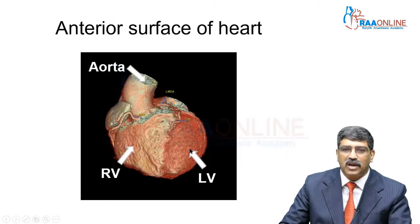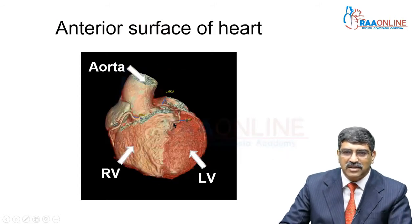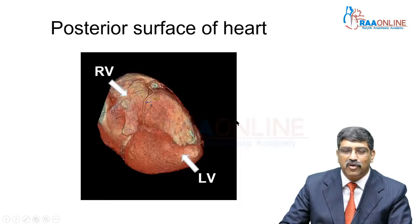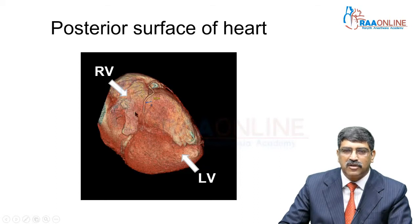Looking at the anterior surface, you can see the left anterior descending artery descending in the interventricular groove between the right ventricle and the left ventricle. Looking at the posterior surface, you can see the right coronary artery in the posterior interventricular groove between the right ventricle and the left ventricle.